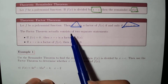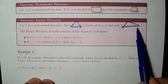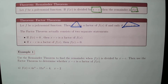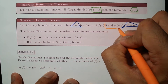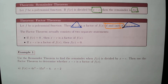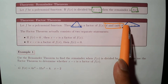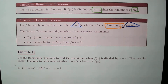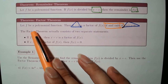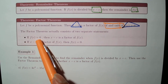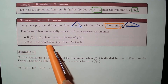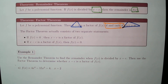Let f be a polynomial function. Then x minus c is a factor if and only if f of c equals zero. This 'if and only if' means the statement works in both directions: if f of c equals zero, then x minus c is a factor; and if x minus c is a factor, then f of c equals zero.